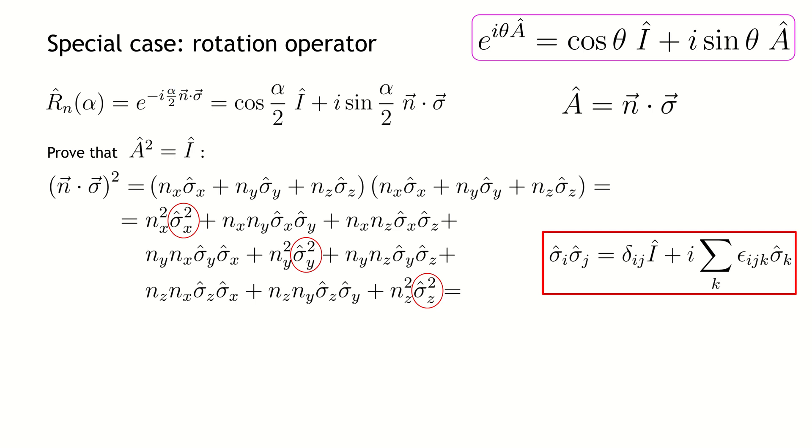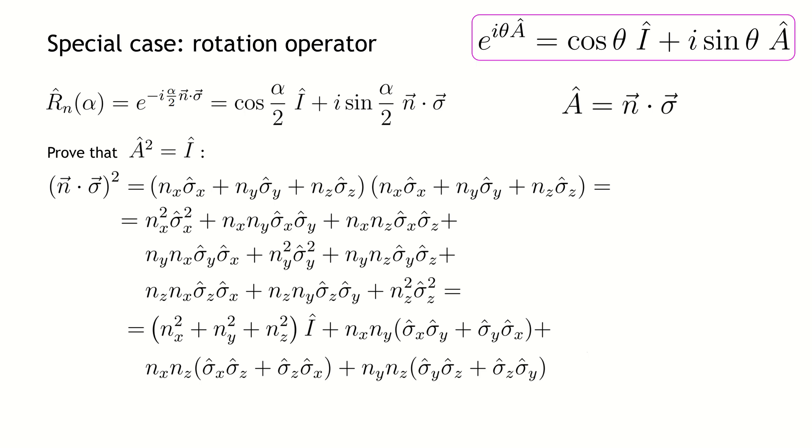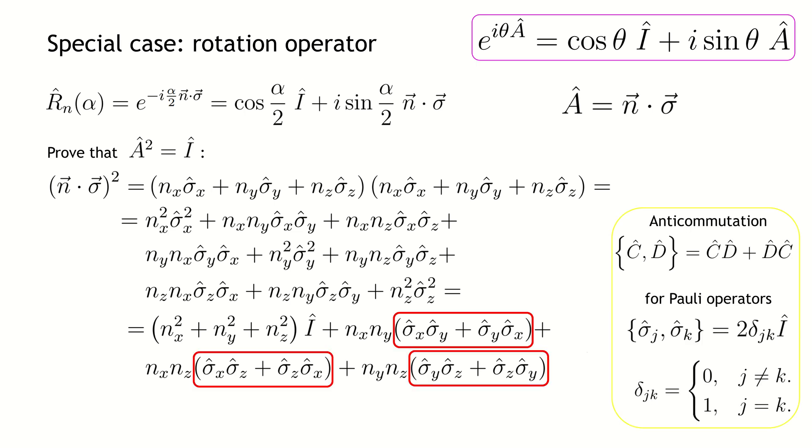For more information, you may watch the video about the algebra of the Pauli matrices. Then we group the terms with the identity operator and the others so that we can use the anticommutation relations for the Pauli operators.